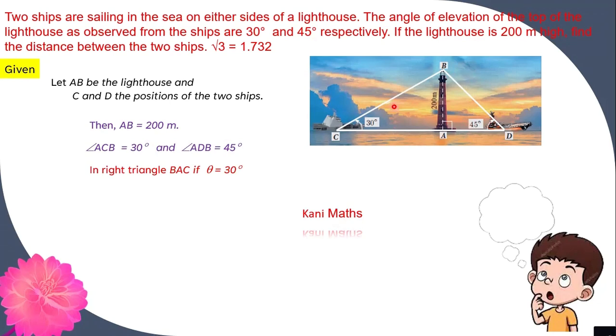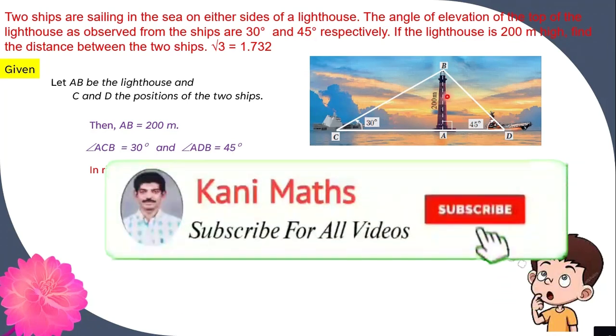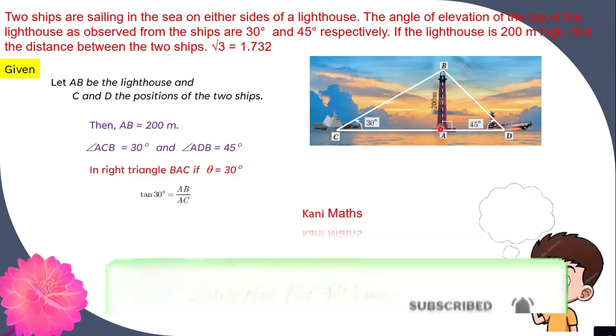So first right angle triangle BAC, the angle is 30 degrees. Then we already know that tan theta is equal to the opposite side by the adjacent side. That is AB by AC. Tan theta is equal to 1 by root 3 is equal to AB. Height is 200 meters, 200 by AC.